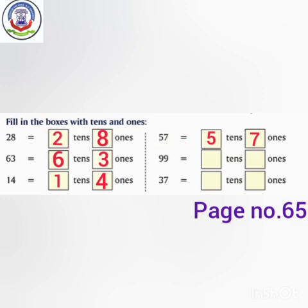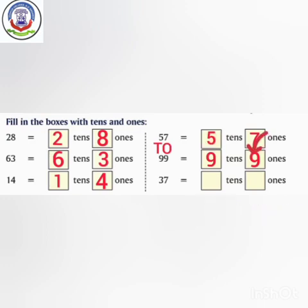We will write 1s here and 10s here. How many 10s do we have? We have 9 tens. How many 1s do we have? We have 9 ones. So here we have 9 tens and 9 ones.